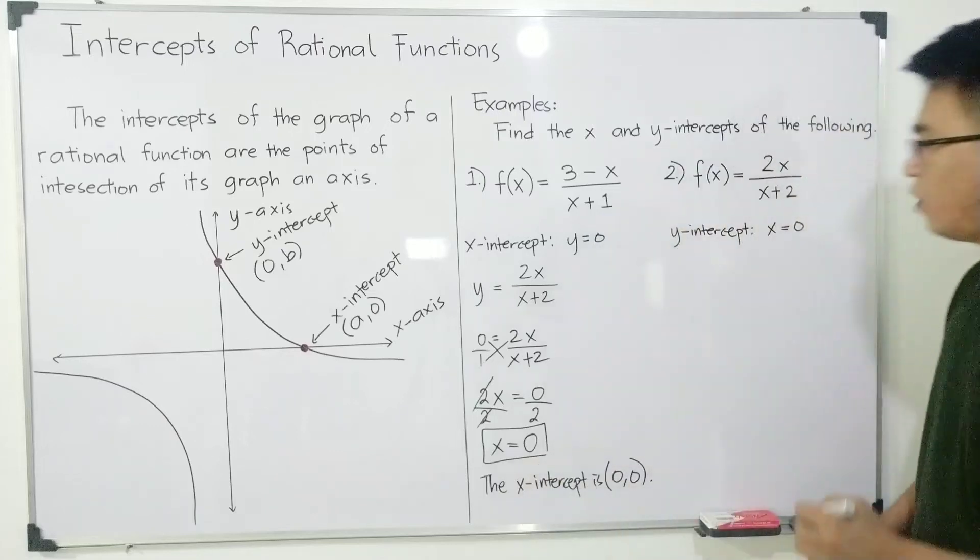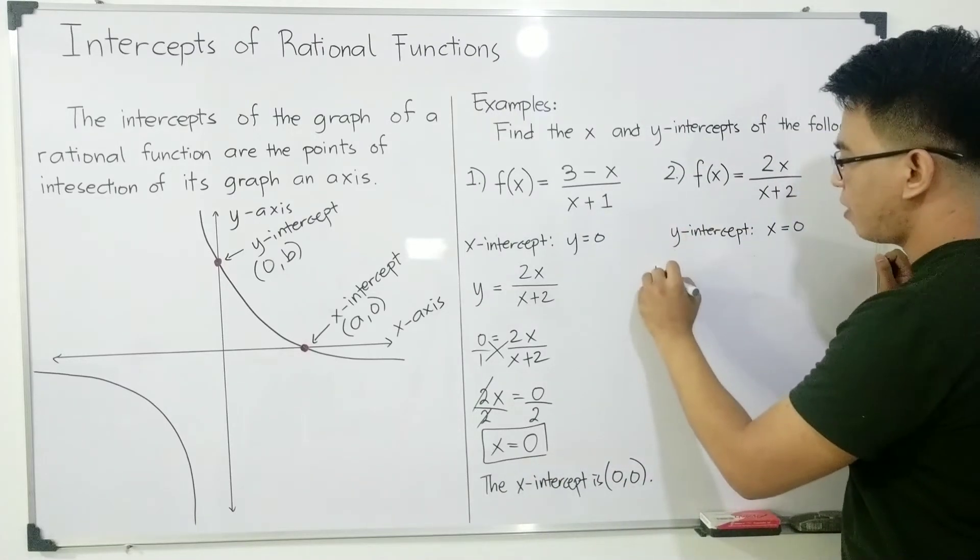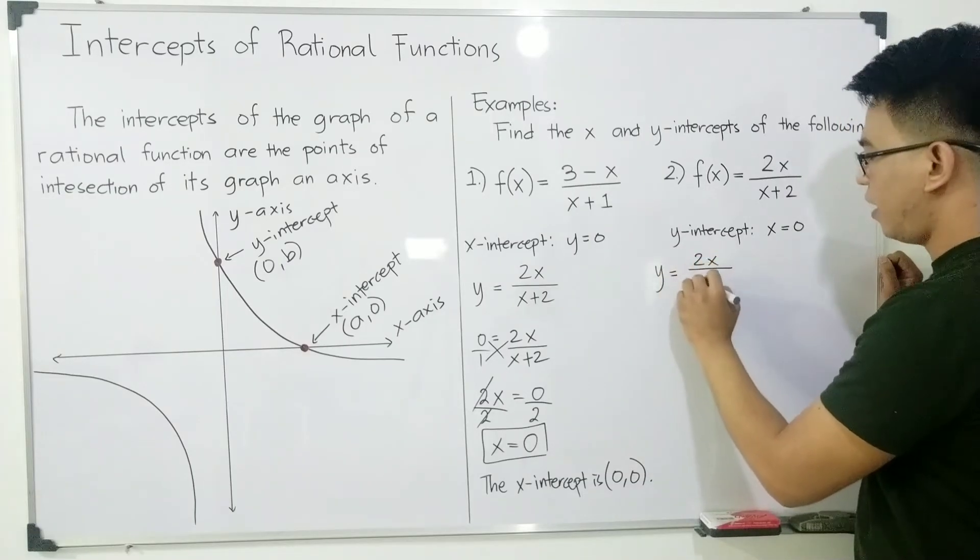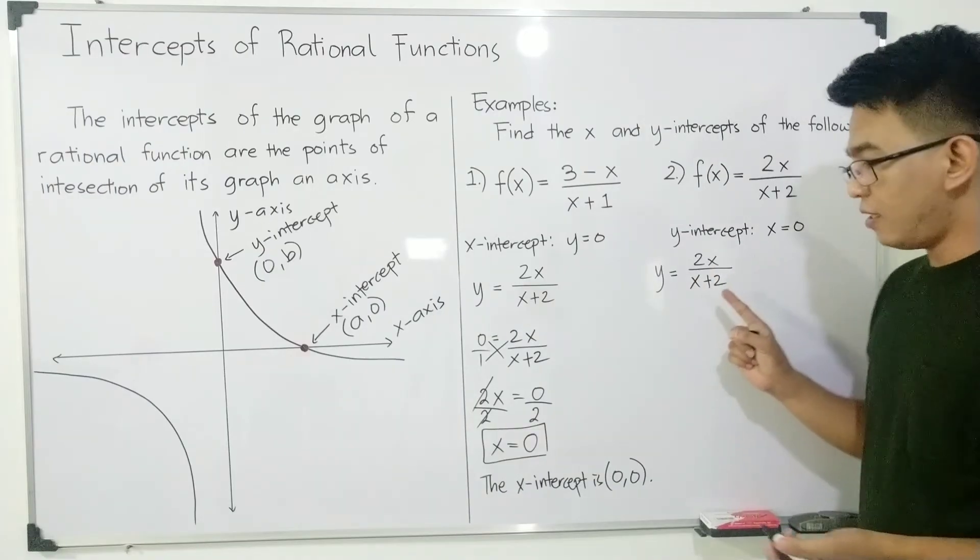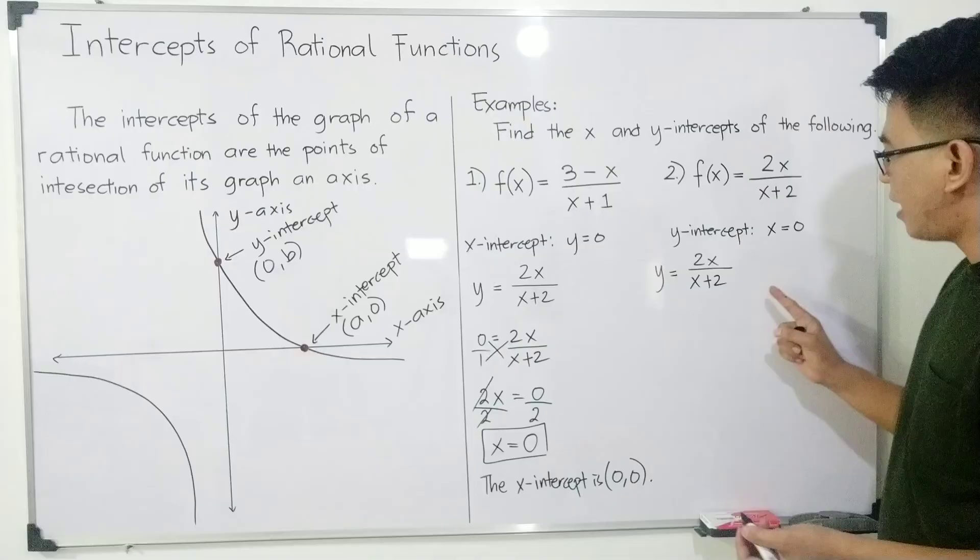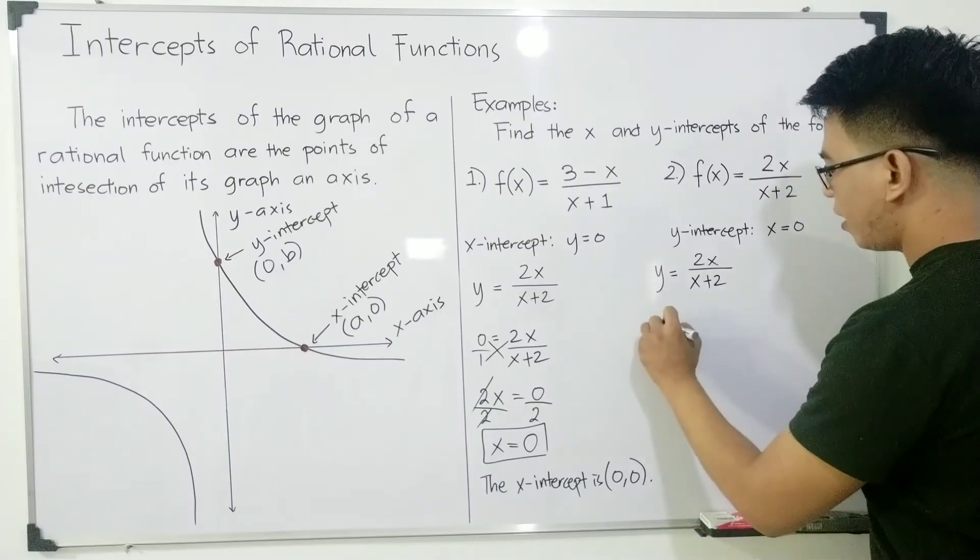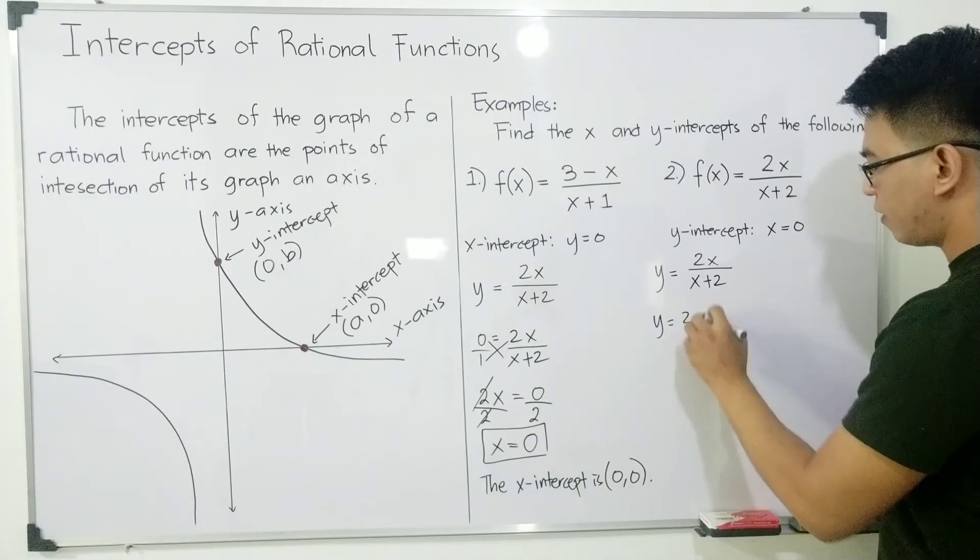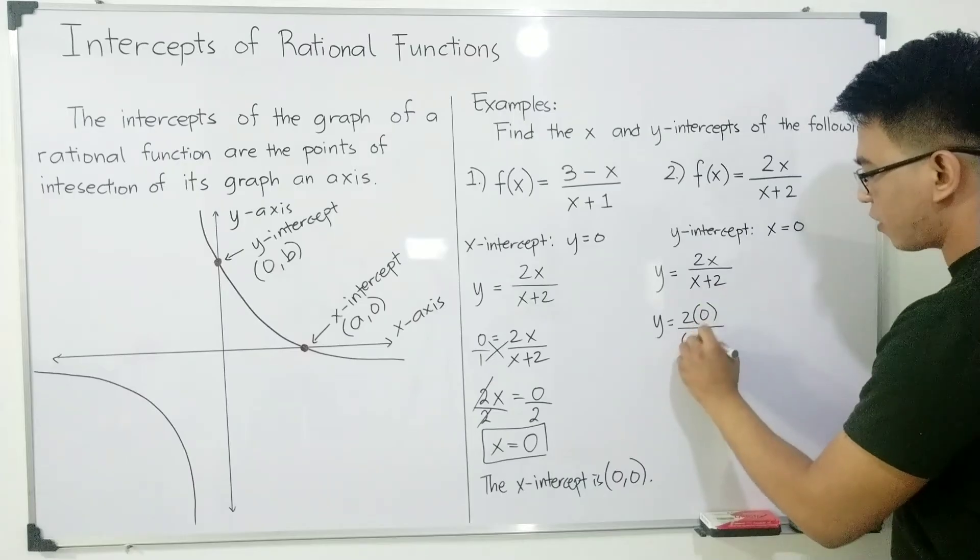Now, how about the y-intercept? Same thing guys. We will replace this by y. You have y = 2x/(x+2). And all the x's here will be replaced by 0. So your y = 2(0) over (0+2).